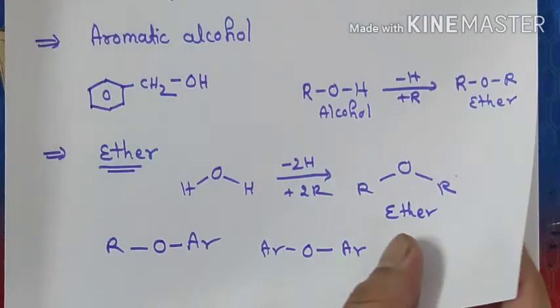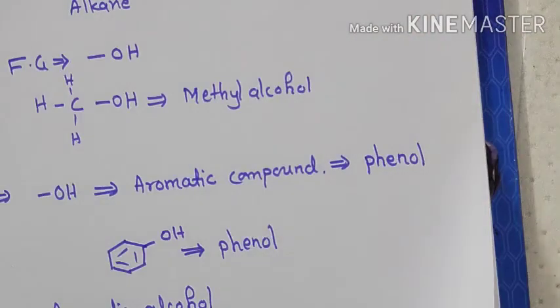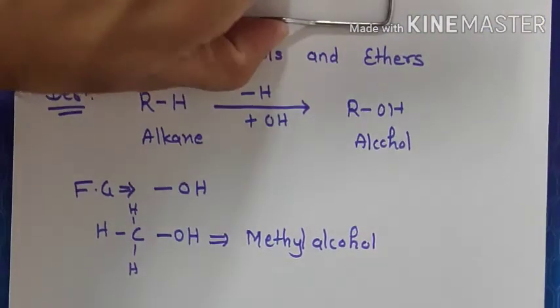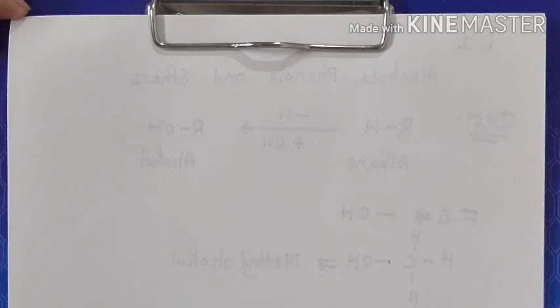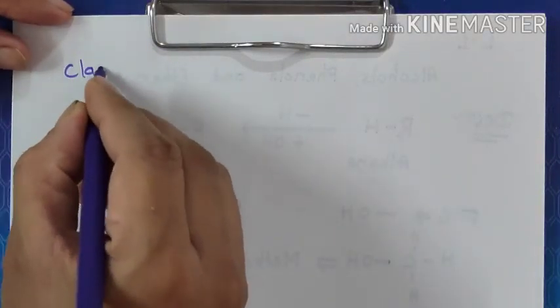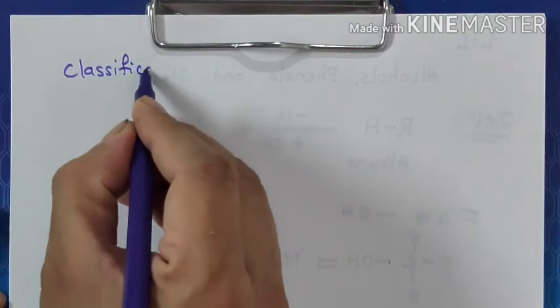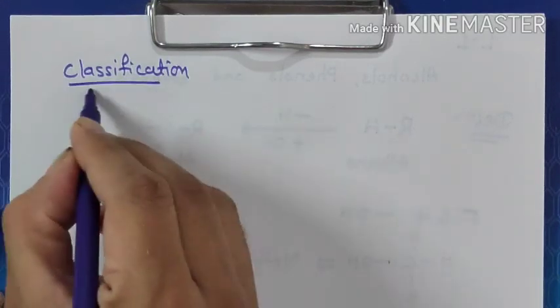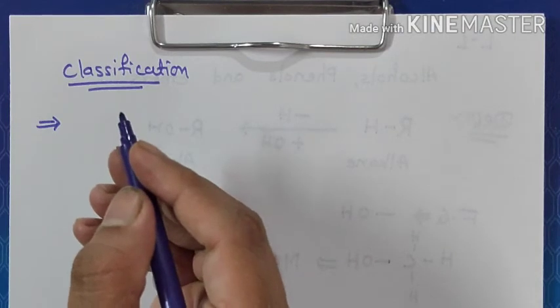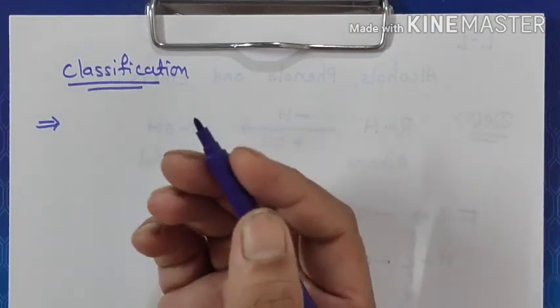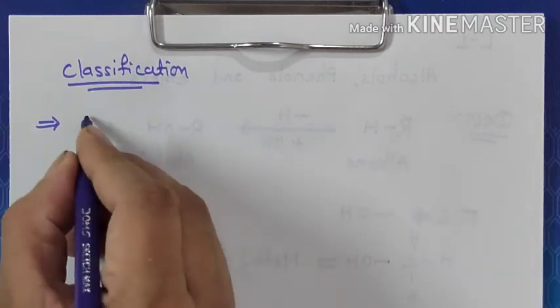Going further, we will see the classification of alcohol first. Alcohol can be classified as monohydric alcohol, dihydric alcohol, trihydric alcohol, and polyhydric alcohol.